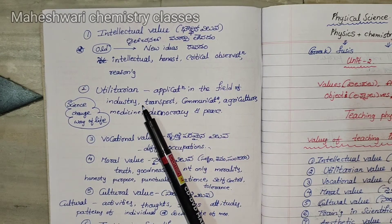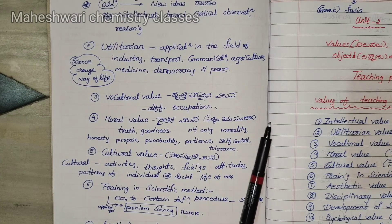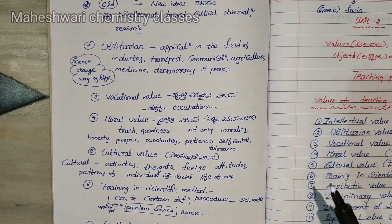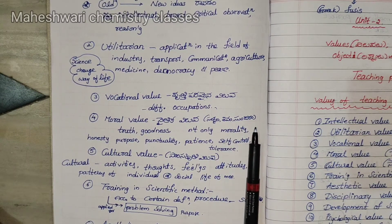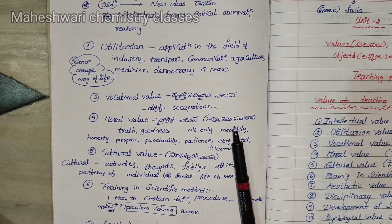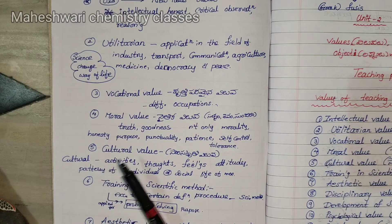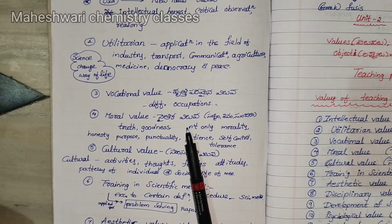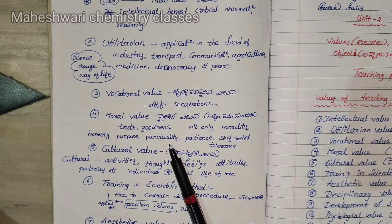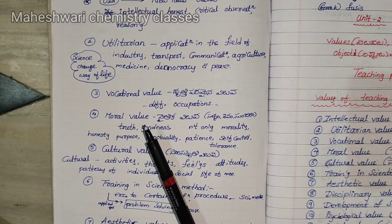Utilitarian purpose. Third, vocational value — it is about different occupations. Moral value includes truth, morality, honesty, punctuality, patience, self-control, and tolerance — these are moral values.